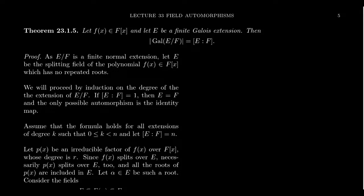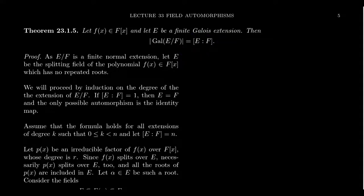E as an extension of F needs to be a normal extension, meaning it is the splitting field for some collection of polynomials. It also needs to be a separable extension — that polynomial collection cannot have any repeated roots. That's what we need: a separable normal extension, hence a Galois extension. When you have a Galois extension, the order of the Galois group equals the degree of the extension, which is very important for computing Galois groups.